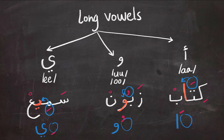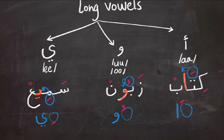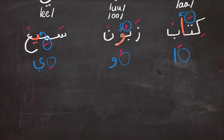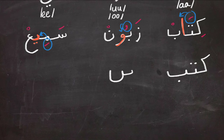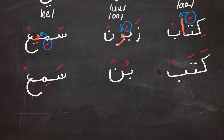It is also very important to understand the difference between long and short vowels. This is one of the most common mistakes that Arabic learners make. Notice how the pronunciation differs from the short to the long vowel.